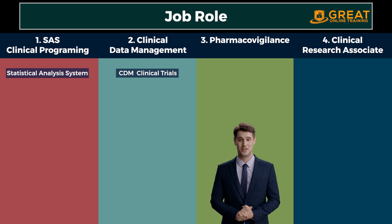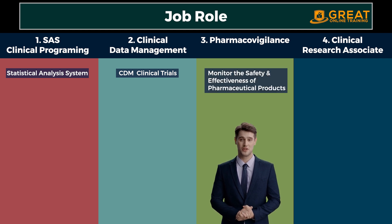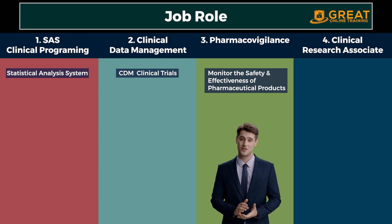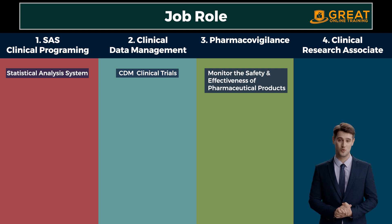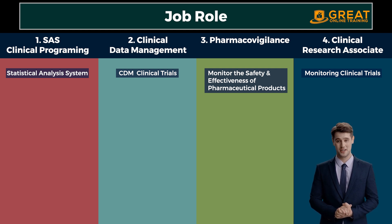Third, Pharmacovigilance. PV pharmacovigilance professionals monitor the safety and effectiveness of pharmaceutical products throughout their life cycle, from preclinical development to post-marketing surveillance. They collect, analyze, and evaluate adverse event reports and identify potential safety concerns or trends. Their work helps to minimize risks associated with drug use and ensures that regulatory authorities and healthcare professionals are informed of any safety issues. Fourth, Clinical Research Associate. CRA clinical research associates are responsible for monitoring clinical trials and ensuring compliance with the study protocol, good clinical practice (GCP) guidelines, and applicable regulatory requirements. They visit clinical trial sites, review trial documentation, verify data accuracy, and ensure that the rights, safety, and well-being of trial participants are protected.